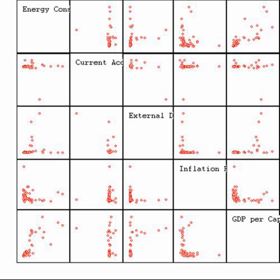Misuse of statistics can produce subtle but serious errors in description and interpretation—subtle in the sense that even experienced professionals make such errors, and serious in the sense that they can lead to devastating decision errors. For instance, social policy, medical practice, and the reliability of structures like bridges all rely on the proper use of statistics. Even when statistical techniques are correctly applied, the results can be difficult to interpret for those lacking expertise. The set of basic statistical skills and skepticism that people need to deal with information in their everyday lives is referred to as statistical literacy.